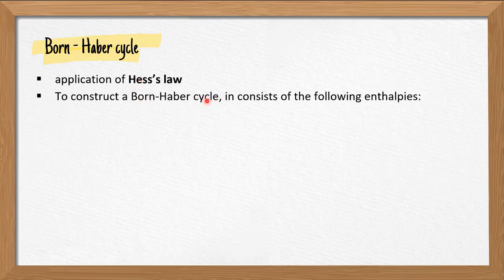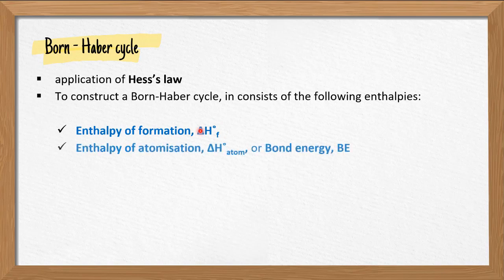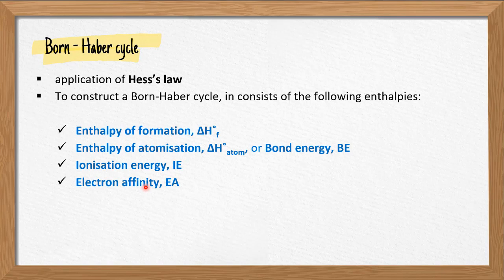To construct a Born-Haber cycle, first you need to identify the following enthalpies. In the questions, you must have the enthalpy of formation, the enthalpy of atomization or bond energy, ionization energy, electron affinity, as well as lattice energy. This lattice energy can either be a positive or negative value. Once you identify that the question consists of all these 5 enthalpies, then you need to do the Born-Haber cycle.